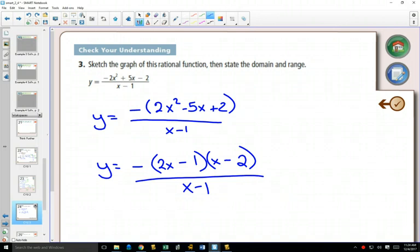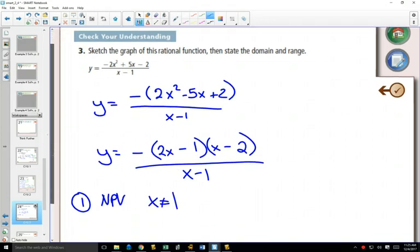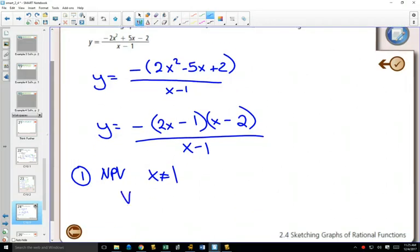And if I quickly multiply that out to do a check, sure enough, I get 2x squared, I get positive 2 at the end, and my outside and inside combine to give me negative 5. Nothing simplifies, so step 1, when you're looking at your non-permissible values, x can't equal 1, that's going to be a vertical asymptote at x equals 1. So nothing simplified ends up with a vertical asymptote.